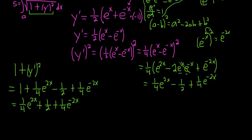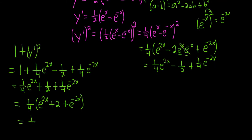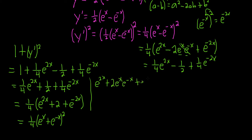We need to take the square root of this expression to integrate. So we factor out 1/4, giving 1/4 times (e^{2x} plus 2 plus e^{-2x}). Note that 1/4 times 2 equals 1/2, which checks out. This expression inside is actually (e^x plus e^{-x}) squared. Verifying: (e^x plus e^{-x})^2 = e^{2x} plus 2·e^x·e^{-x} plus e^{-2x} = e^{2x} plus 2 plus e^{-2x}. That matches exactly.